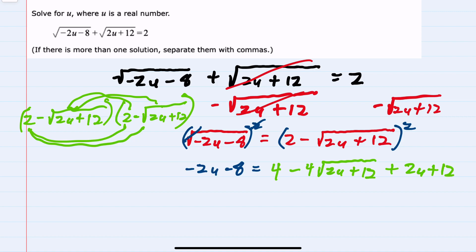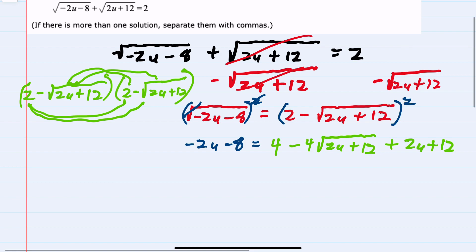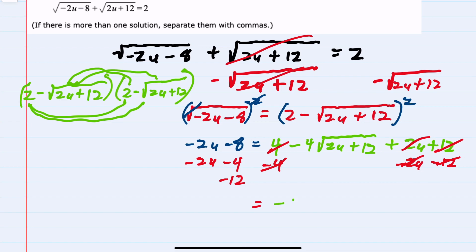From here we now have just one radical. We can start by moving everything else to the other side, so I'll subtract 4 from both sides, subtract 12 from both sides, and subtract 2u from both sides. This gives me on the right hand side -4√(2u+12), and on the left hand side -2u - 2u is -4u, and -8 - 4 - 12 is -24.